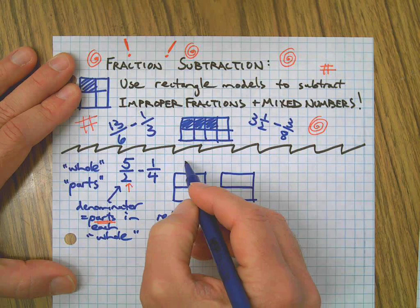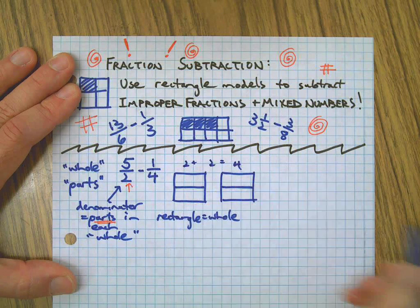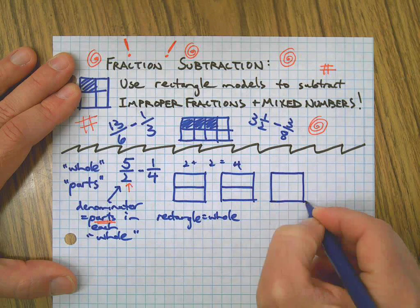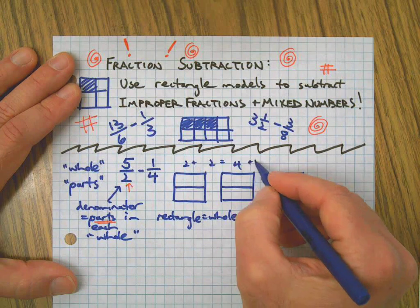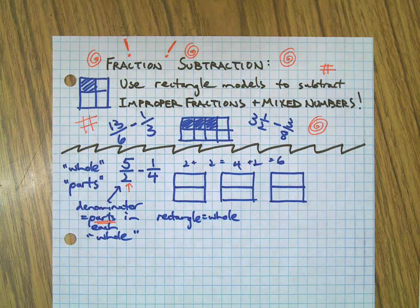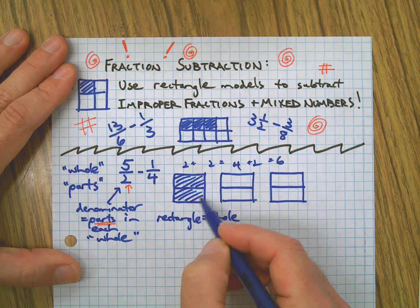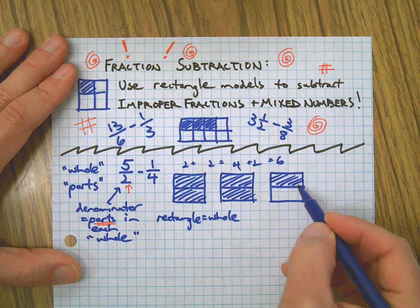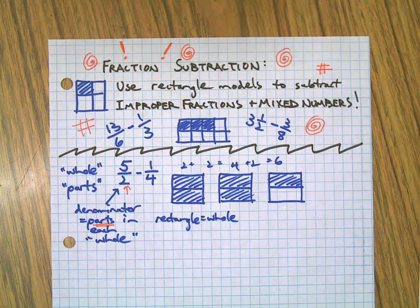I need five pieces but I only have two, so I make another rectangle — now I have four. I need one more to get five, so I make a third whole giving me six pieces, which is enough. I shade in five of them: one, two, three, four, five. There are my five halves.